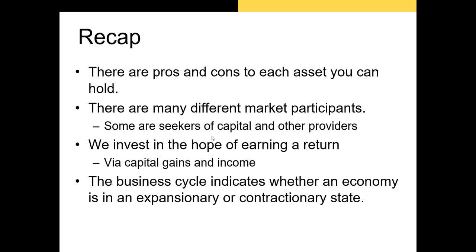Let's recap what we covered. First, I discussed several types of assets — real assets and securities — and noted that securities are often more liquid than real assets. Second, we discussed market participants like institutional investors, individual investors, angel investors, and firms in the market; firms and governments are frequently seekers of capital while individual and institutional investors provide that capital. Next, a positive return can be achieved in two ways: through income received by holding an asset, and from a capital gain received when you sell an asset for more than you paid for it. Finally, I showed you the business cycle, which indicates whether an economy is in an expansionary or contractionary state.